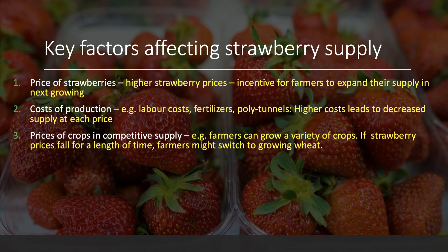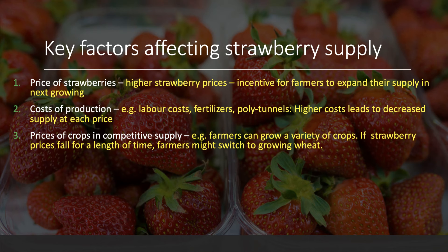The third point concerns competitive supply — we have a separate video on this, so check that out. Farmers can grow a variety of crops, and there's an opportunity cost: growing one crop means sacrificing the ability to grow another. If strawberry prices go down persistently, some farmers may decide to switch out of strawberries into something else — blueberries, wheat, etc. Conversely, when the price of alternative products is low, more strawberries will be grown because farmers see a better profit to be made.